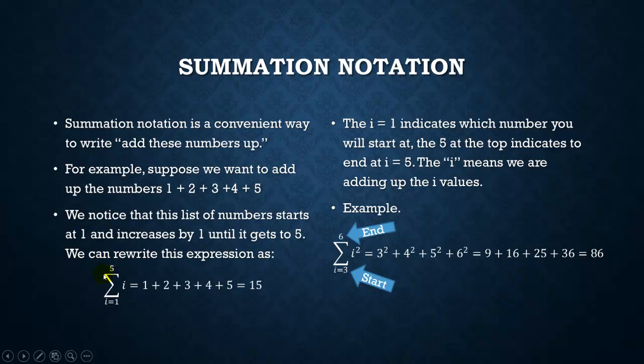We can write it as add up the numbers, and that's what the summation is, starting at 1, ending at 5, and all we're going to do is just add up the numbers as they are, not do anything to them, and that's why we just wrote an i here.